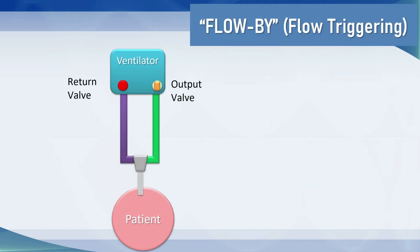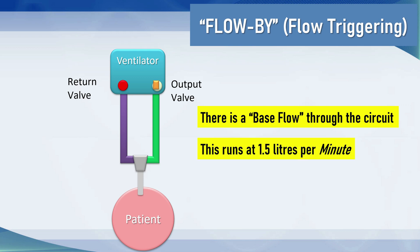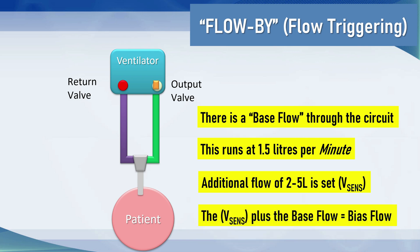Flow travels around the circuit — for example at 1.5 liters per minute — and this is the base flow. Additionally, we add a flow level to this. On some ventilators, for example the Puritan Bennett ventilators, this is called the vSense — the volume sense — and this can be two to five liters. You might set it at three liters. The vSense plus the base flow is the bias flow through the system. So if you've set three liters of vSense and the base flow is 1.5 liters, the total bias flow is 4.5 liters.